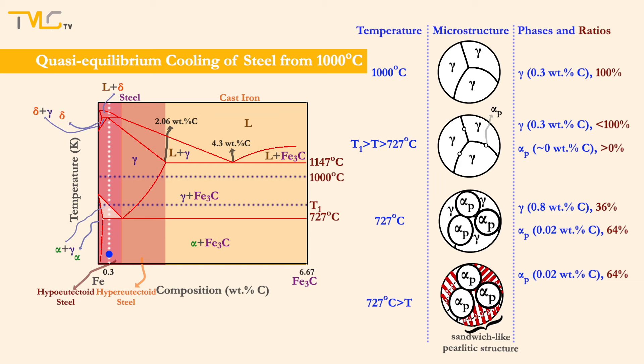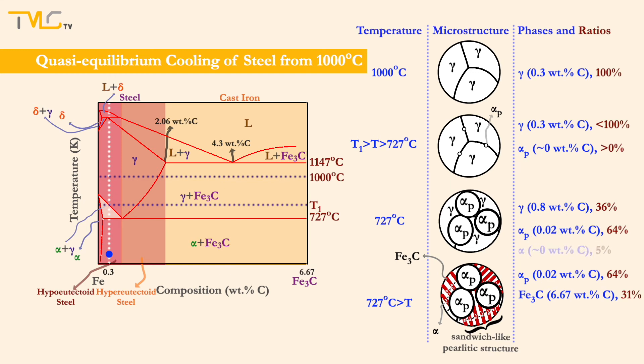From the previous stage, we have 64% primary eutectoid ferrite and 36% austenite phase, which was converted to pearlite. Using the lever rule, the amount of ferrite and cementite in the pearlitic structure can be calculated. Ferrite and cementite phases are found to stand for 95% and 5% of the pearlite, respectively. Since pearlite was standing for 36% of the phase mixture, the ferrite and cementite phases formed after the eutectoid reaction stand for 31% and 5% of the overall phase mixture, respectively.